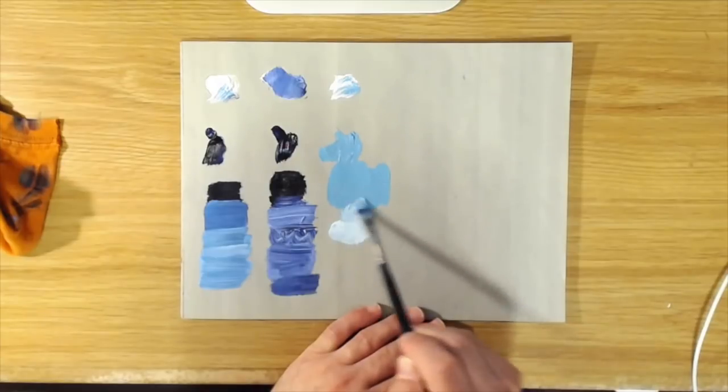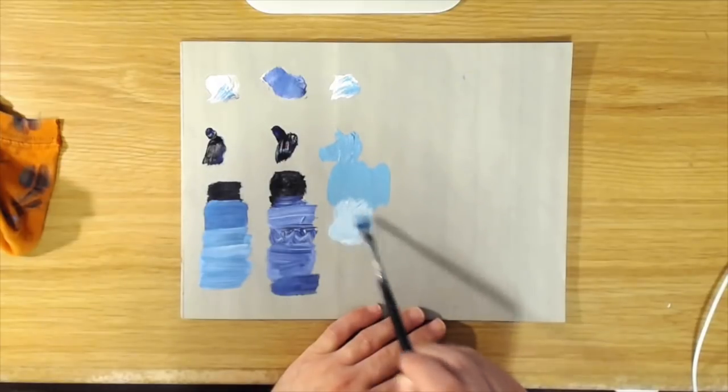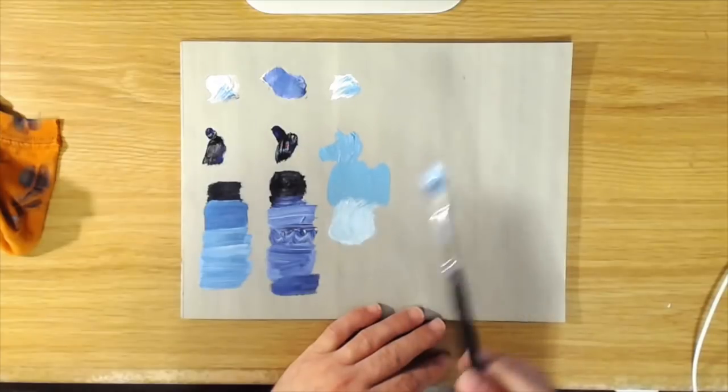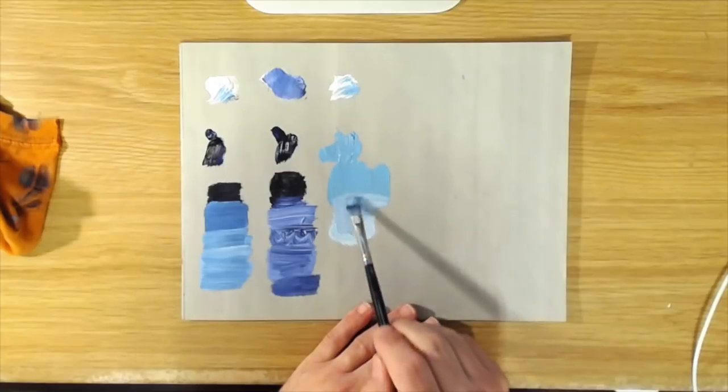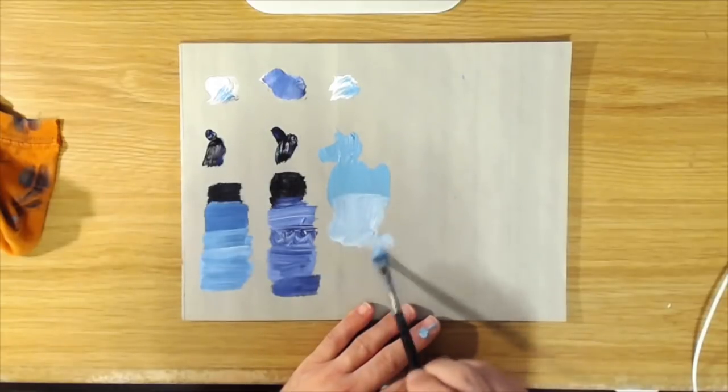And because it's a mineral color it doesn't really have a high tinting strength, but it really is a beautiful color because it literally is ground up turquoise.